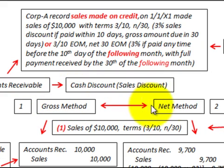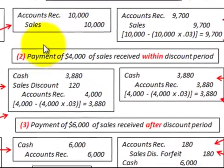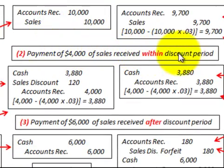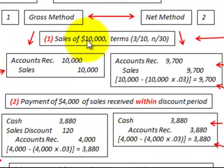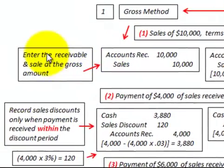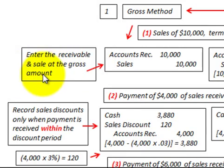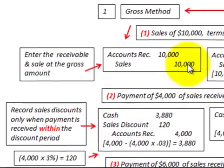We'll compare the gross method with the net method across three situations: recording the initial sale, payment received within the discount period, and payment received after the discount period. With the gross method, we enter the receivable and the sale at the gross amount — the ten thousand dollar sale. We increase accounts receivable for ten thousand dollars and recognize sales for ten thousand dollars.